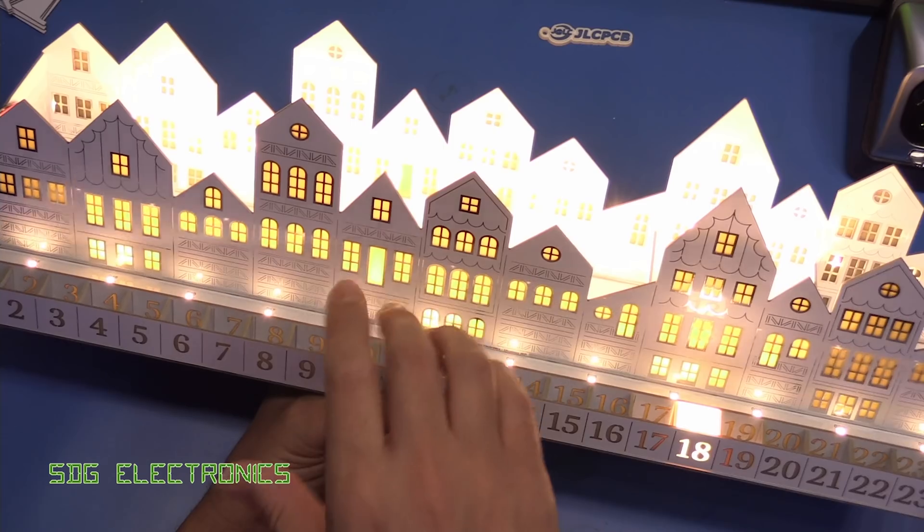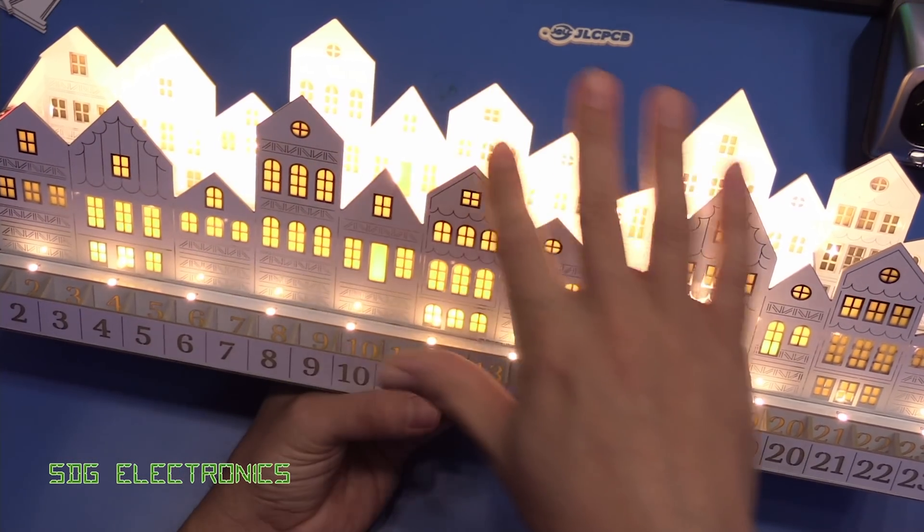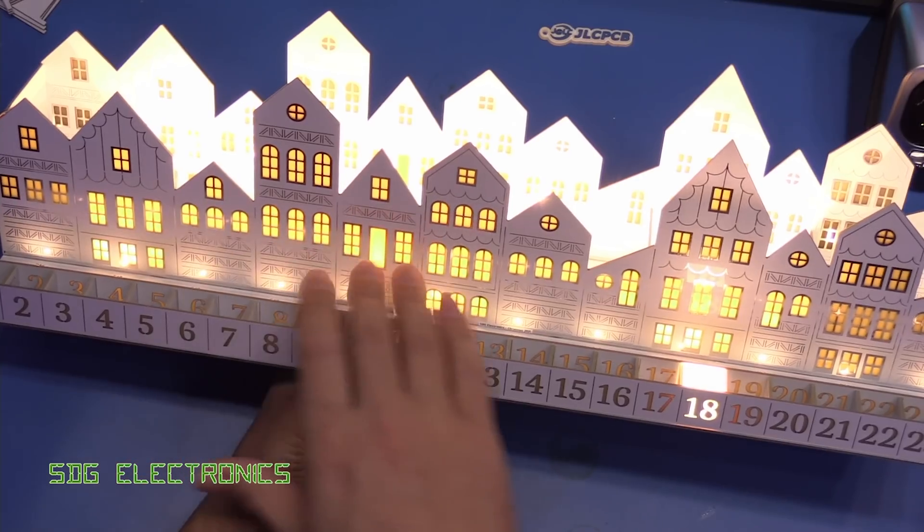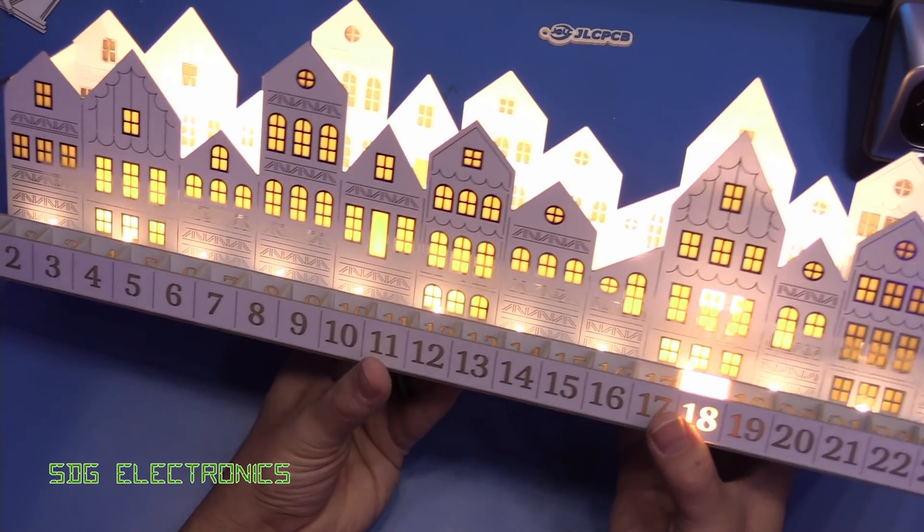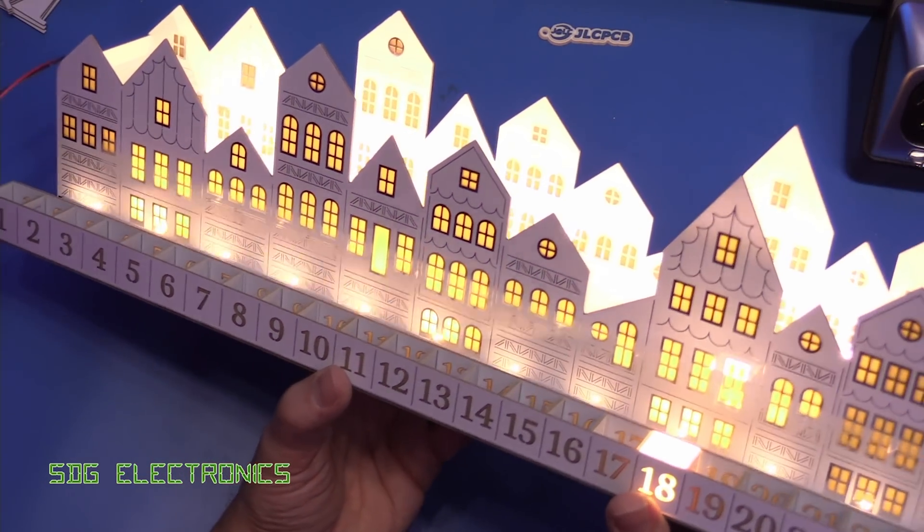The final thing to do which we'll do in the next video is 3D print a roof to go over the top of this and also to go along here and that will finish off the project quite nicely. But I think that's come together quite nicely.